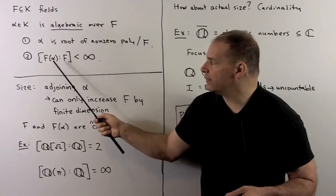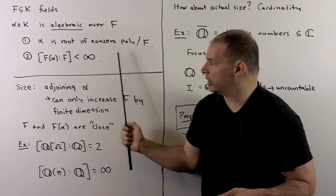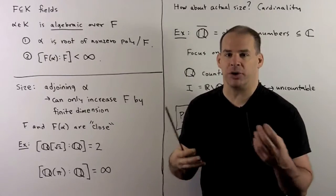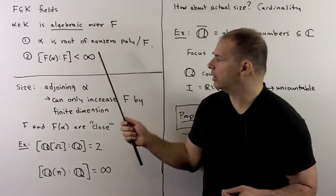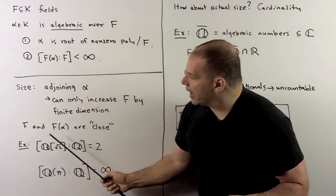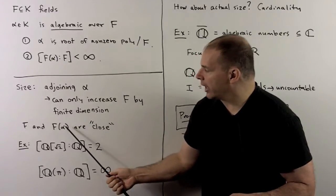So we have a finite dimensional vector space over f. With our second condition, we can think of the property of algebraic as being a measure of size. Here, size in terms of dimension. I would think of f and f adjoined alpha as being close when alpha is algebraic.